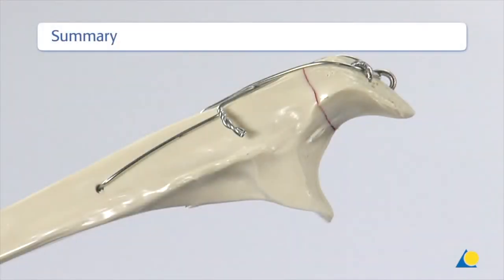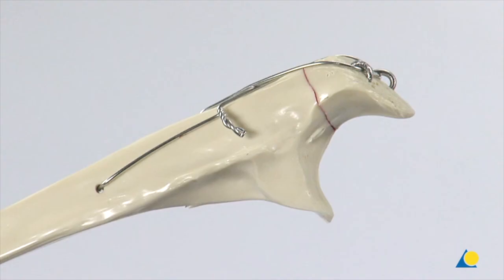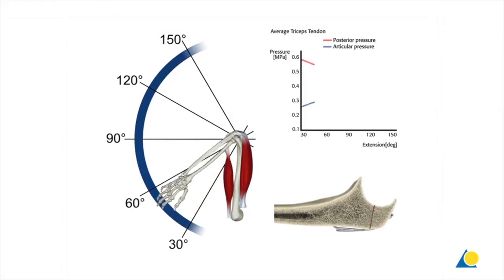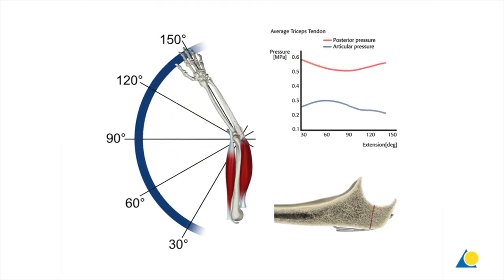A transverse olecranon fracture has been treated using a figure of 8 tension band wire. Tension forces from the pull of the triceps are transformed into compression forces at the fracture site when the triceps is actively used.